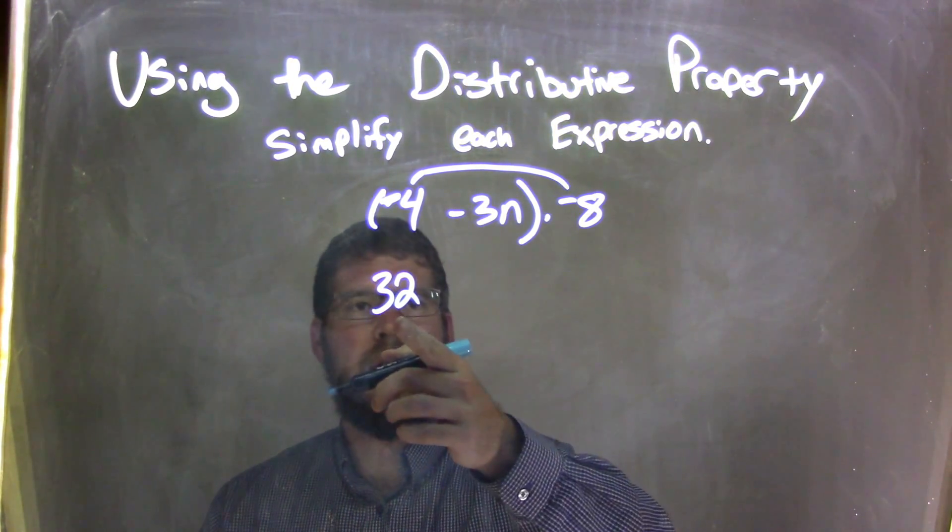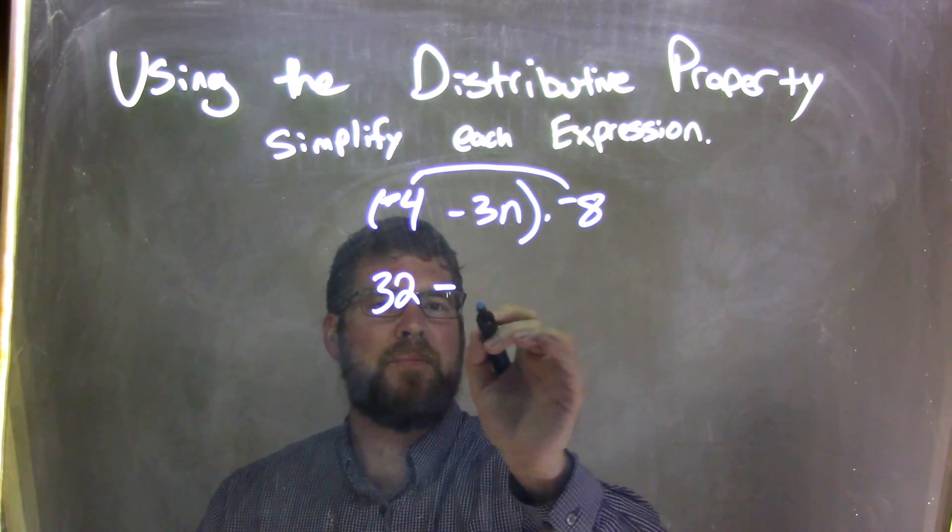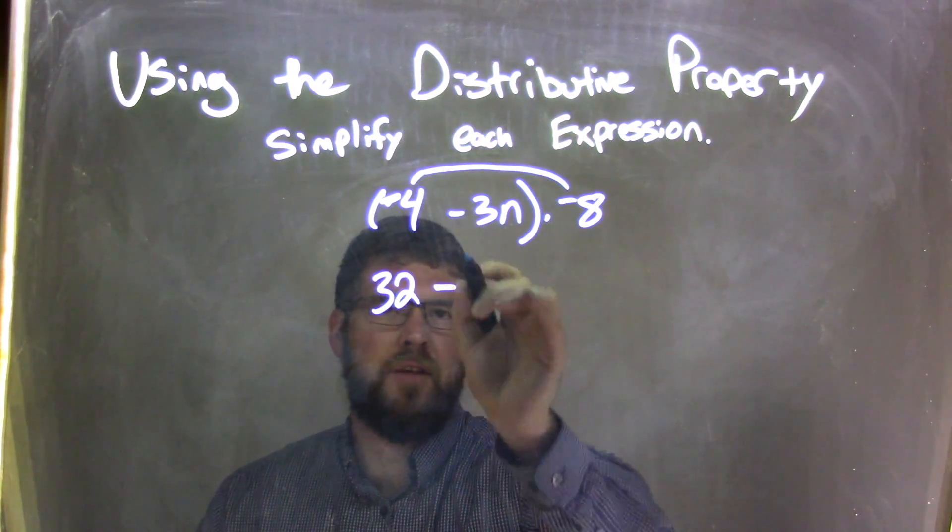Negative 8 times negative 4 is positive 32. You bring down this negative and put the minus sign down here.